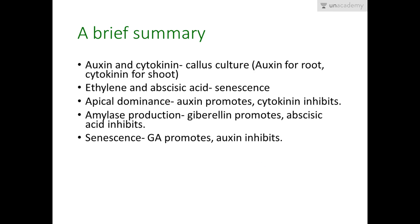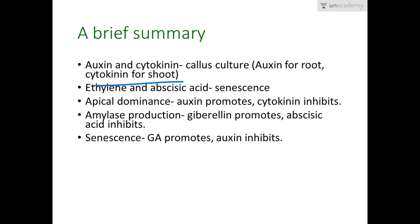Because it is a stress hormone, abscisic acid is used as an anti-transpirant in plants in experiments. Now for a brief summary: auxin and cytokinin are used in callus culture — both have a promoting function. Auxin is used for root development and cytokinin for shoot development. Higher auxin content gives more root development; higher cytokinin content gives more shoot development.